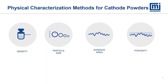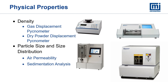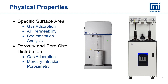The physical characteristics we'll be talking about today are density, particle size, surface area, and porosity. To determine density, we use a gas displacement pycnometer and a dry powder displacement pycnometer. For particle size and size distribution, we use air permeability analysis and sedimentation analysis. For specific surface area, we use gas adsorption, air permeability, and sedimentation analysis. For porosity and pore size distribution, we use gas adsorption as well as mercury intrusion porosimetry.